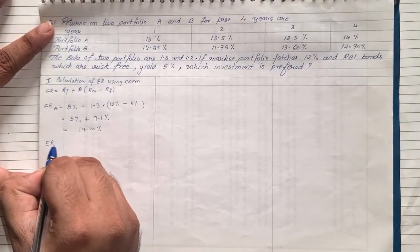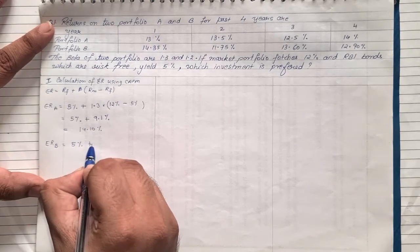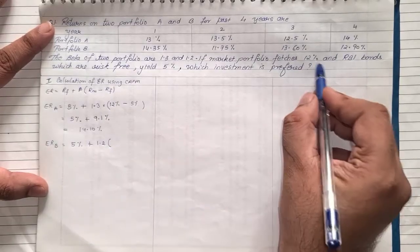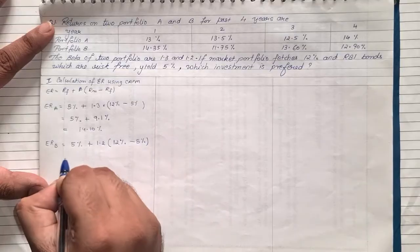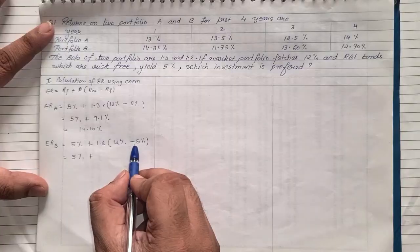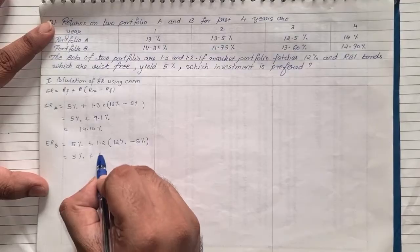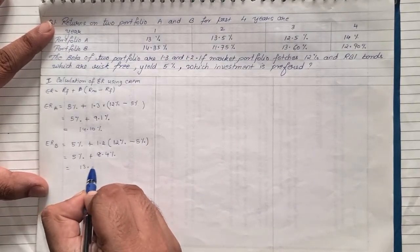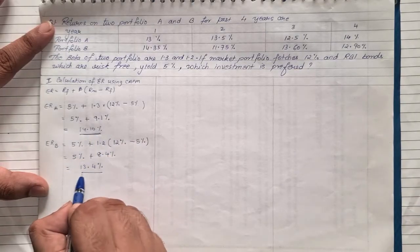Similarly, for portfolio B, the risk-free return is five percent, plus beta of 1.2, multiplied by (market return of 12 percent minus risk-free return of five percent). Solving: five percent plus (7 multiplied by 1.2 = 8.4), giving a total expected return for portfolio B of 13.4 percent.